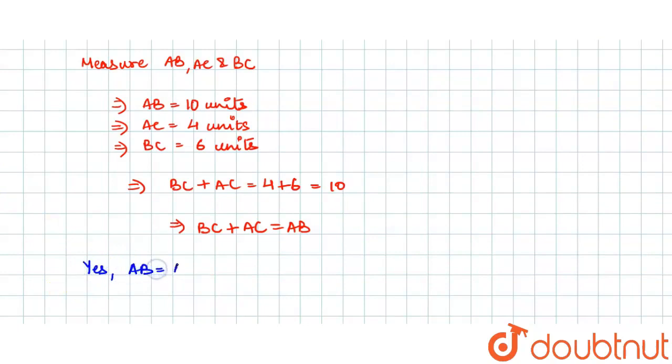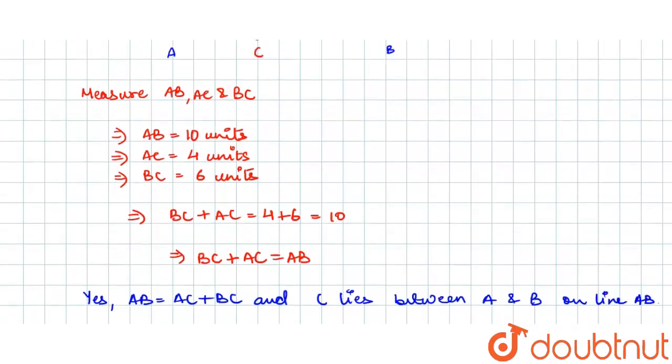Yes, AB equals AC plus BC, and C lies between A and B on line AB. So I will write it as on line AB. With this, we finish our question.